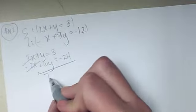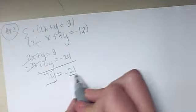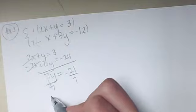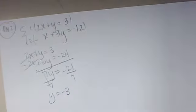These two cancel. When I add straight down I have 1y plus 6y is 7y. 3 and negative 24 is negative 21. Divide both sides by 7. And y equals negative 3.